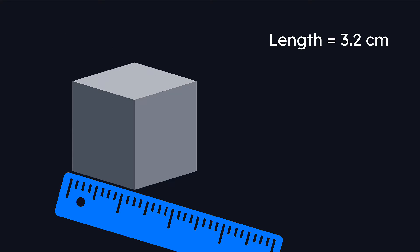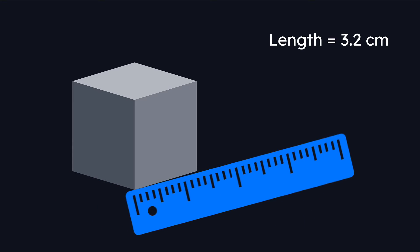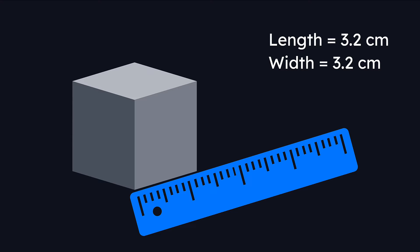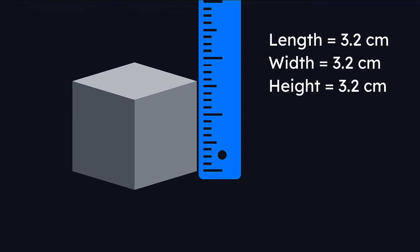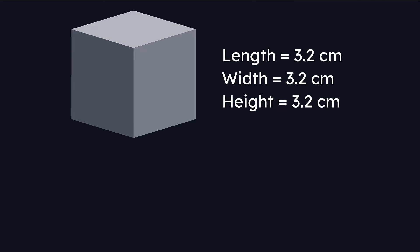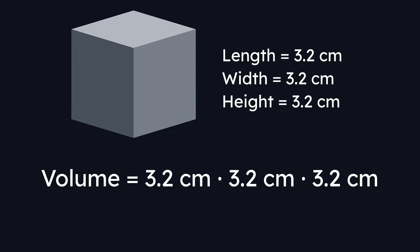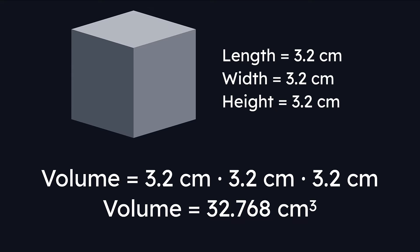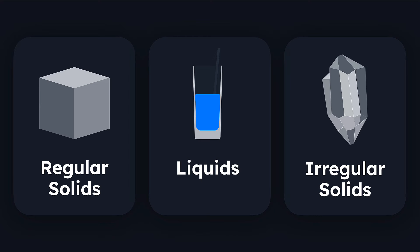If I were to measure one side of this cube and find that it was 3.2 centimeters, I know that the width of this cube, because it's a cube, will also be 3.2 centimeters, as well as the height. So by using the formula, I need to multiply these three measurements together. Volume is going to be 3.2 times 3.2 times 3.2. Doing that math gives us a volume of 32.768 centimeters cubed, meaning we can fit 32.768 cubic centimeters of space within this regular solid.